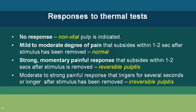For both heat and cold tests, and for EPT, always test the normal contralateral tooth first so the patient understands what a normal response feels like. For example, if the complaint is about tooth 11, first test 21 or 22, then 11 and 12. This allows the patient to differentiate between stimuli. When the patient does not respond to either thermal test, the pulp is non-vital.